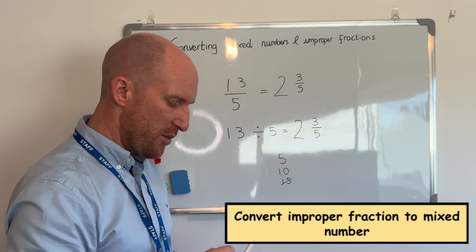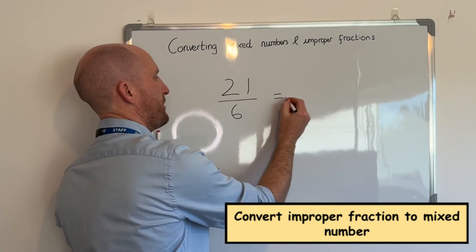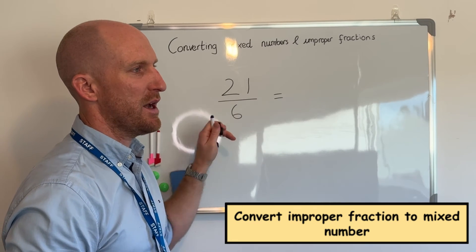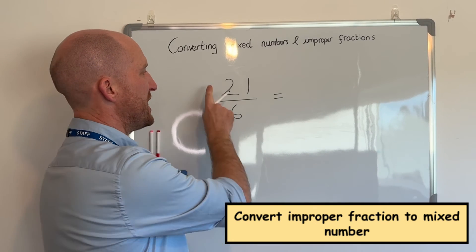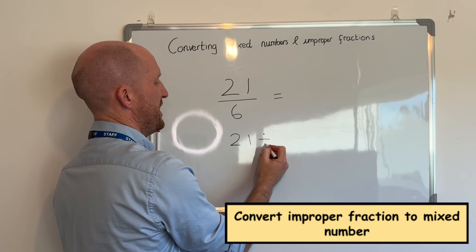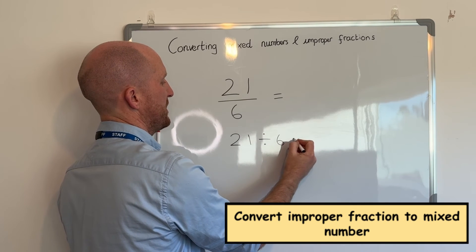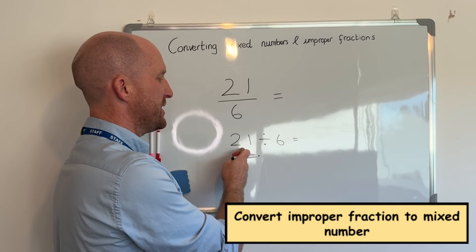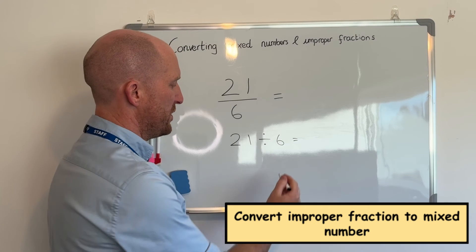Let's do one more example. So in this example we have twenty-one-sixths. So remember we take the numerator which is twenty-one and we divide it by six. So in my head I am asking myself how many sixes are in twenty-one.